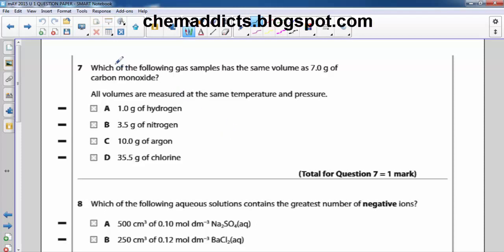Let's read the question. Which of the following gas samples has the same volume as 7g of carbon monoxide? All volumes are measured at the same temperature and pressure. Is it 1g of hydrogen, is it 3.5g of nitrogen, is it 10g of argon, or is it 35.5g of chlorine?